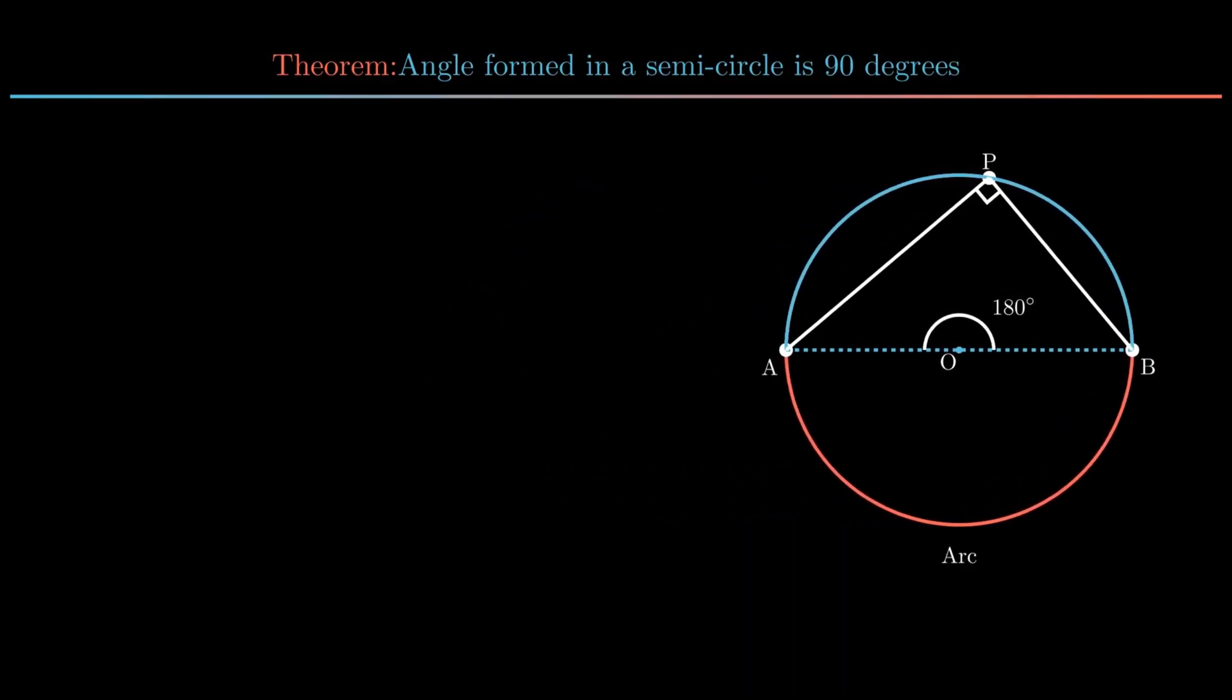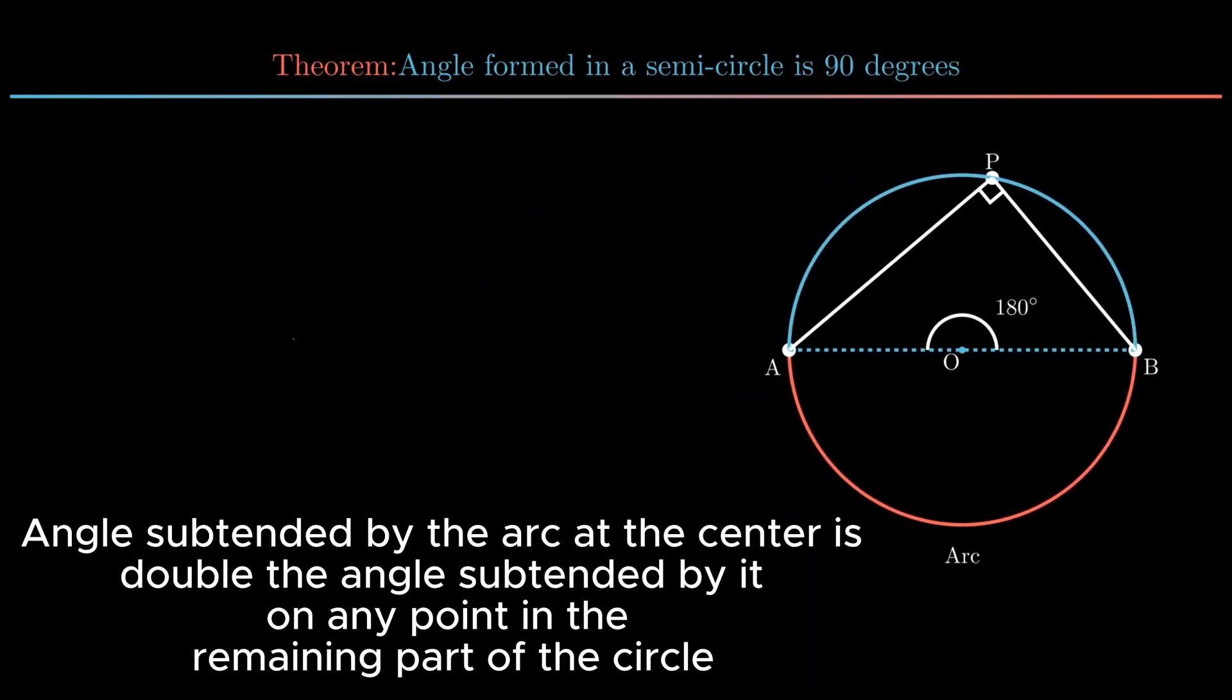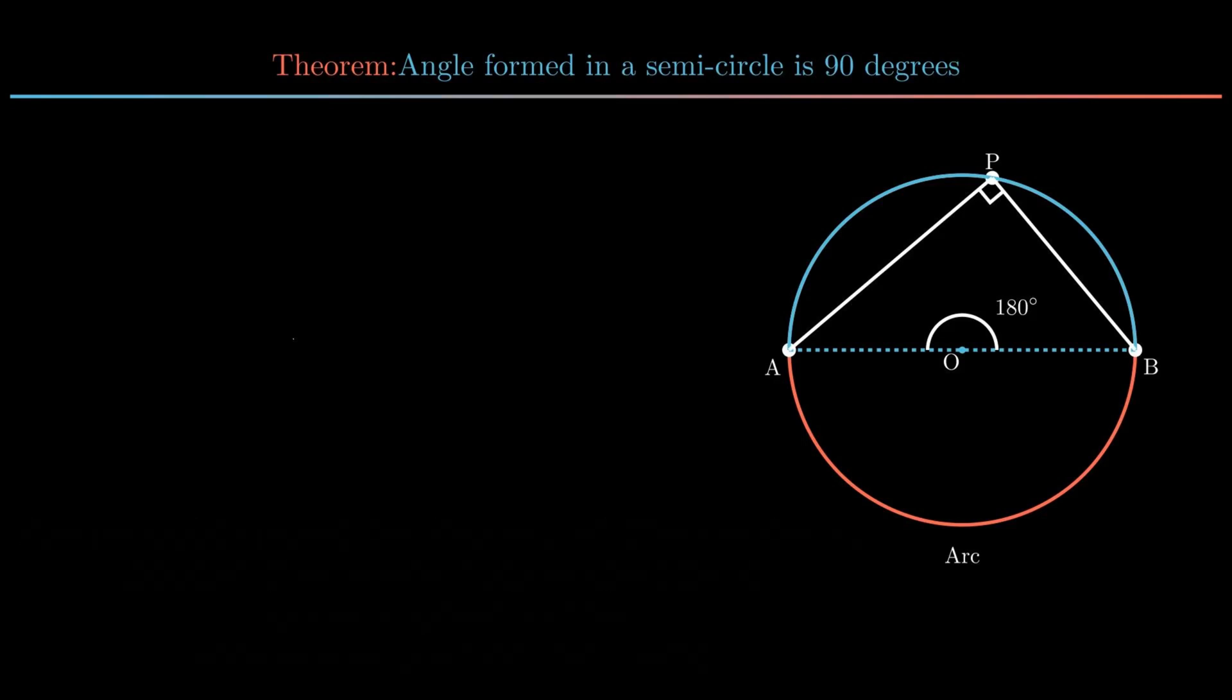As the angle subtended by the arc at the center is double the angle subtended by the same arc at any point on the remaining part of the circle, thus angle APB is equal to half of 180 degrees. Hence the theorem is proved.